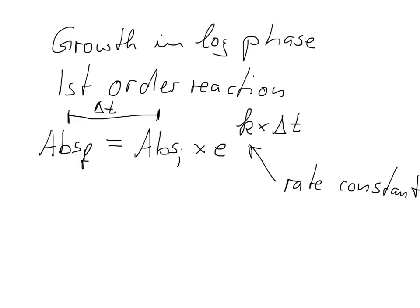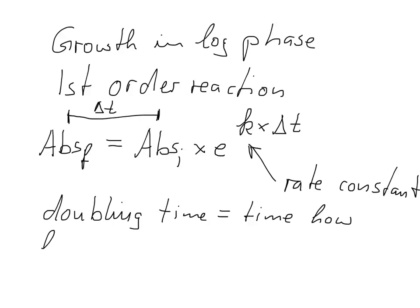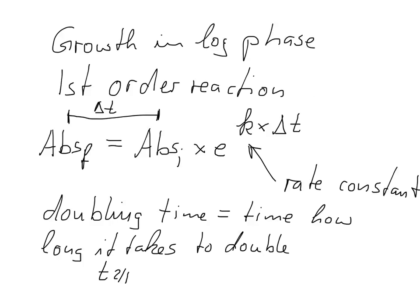Usually biologists don't easily work with rate constants — they are a little bit of a weird concept — but rather they work with what is called the doubling time. The doubling time does exactly what it's supposed to say: it is the time it takes the culture to double. Very often it is abbreviated as t 2/1, meaning we go from 1 to 2, and this is related to the equation ln 2 divided by k, the rate constant. With that in mind, we can use this equation to do all sorts of calculations.